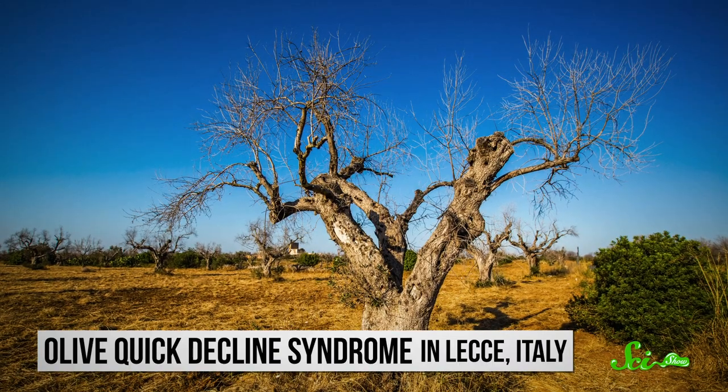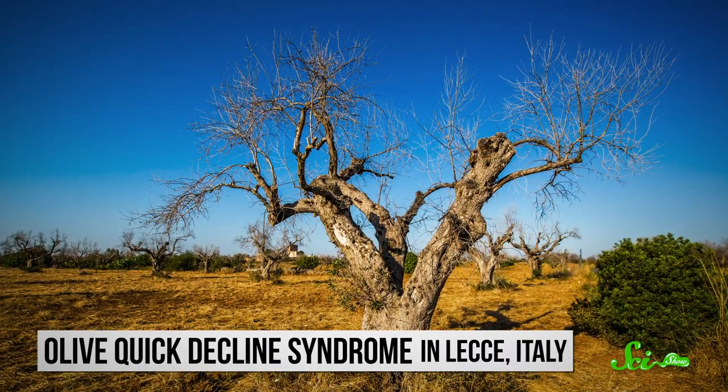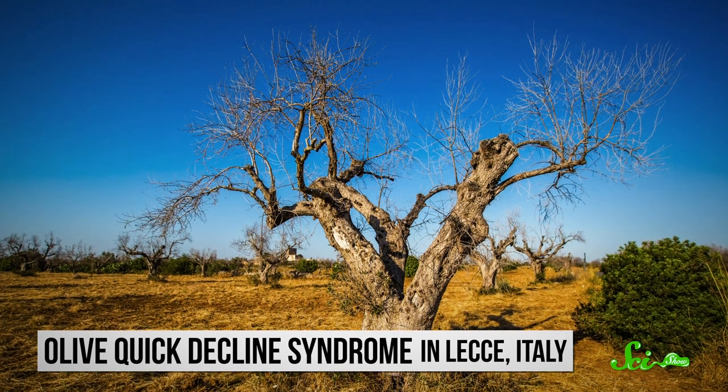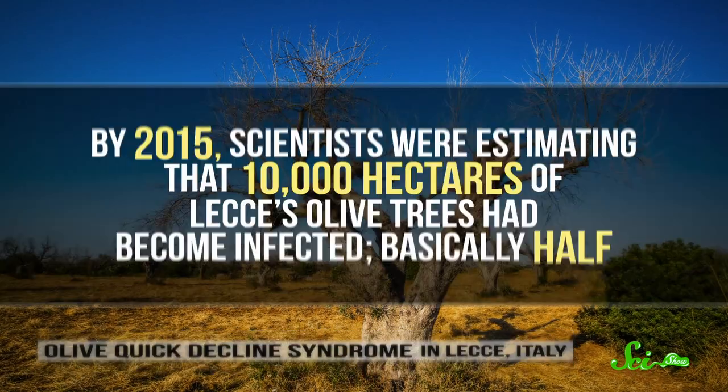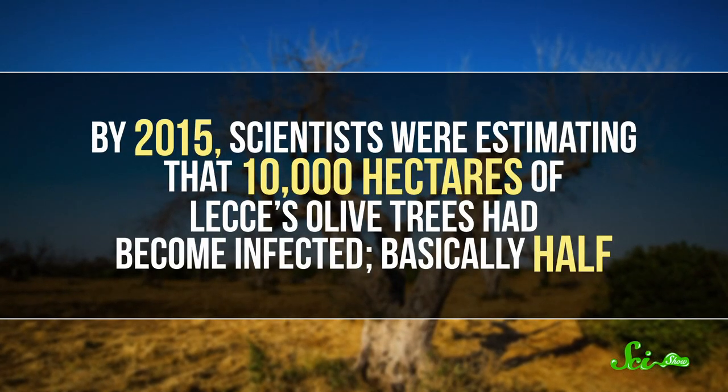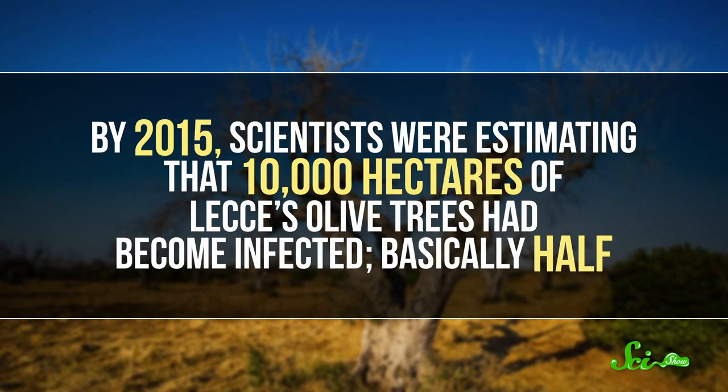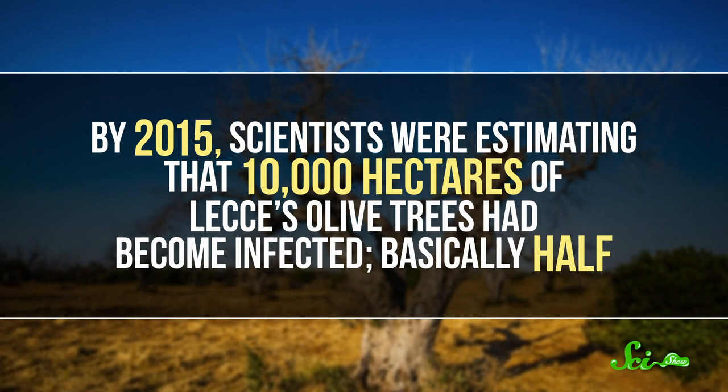It was 2008 when the first case of one such disease known as Olive Quick-Decline Syndrome was discovered in the Italian province of Lecce. By 2015, scientists were estimating that 10,000 hectares of Lecce's olive trees had become infected.